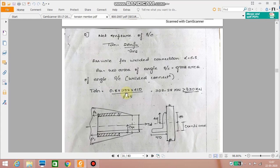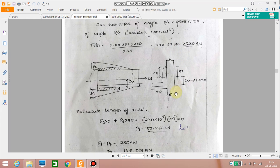So Tdn equal to 0.8 into 1152 into 410 by 1.25. It is 302.28 kilonewton which is again greater than 230 kilonewton. Again the selected section is OK for us.